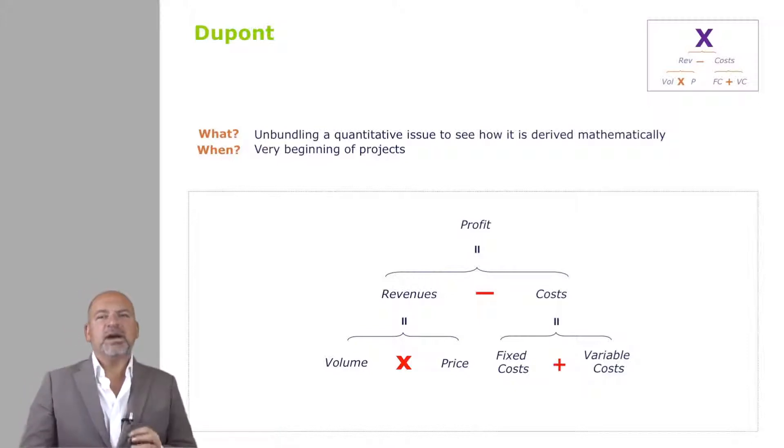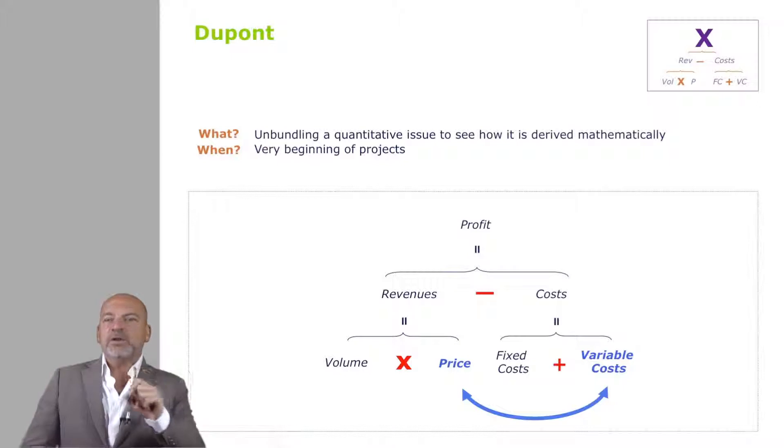If your costs are entirely variable, the only driver of revenues you care about is price. Well done for those of you who picked it. Why? Because if your costs are entirely variable, then you have zero fixed costs.